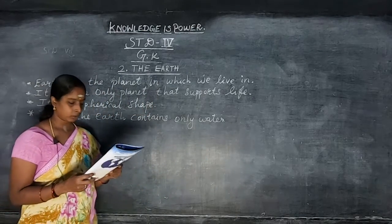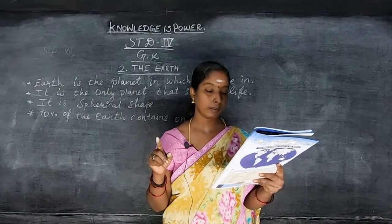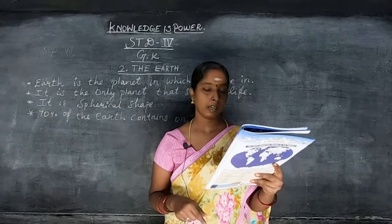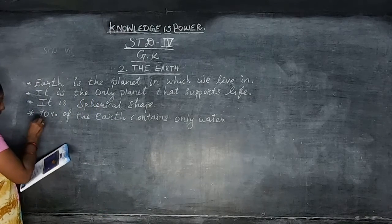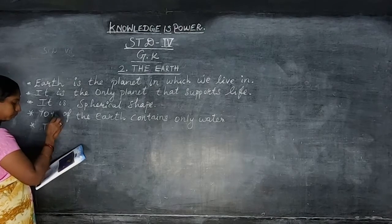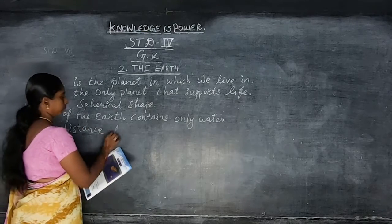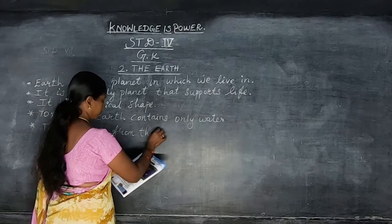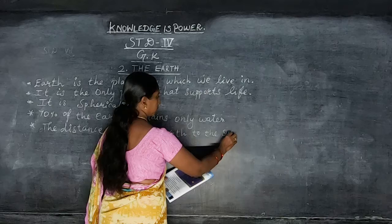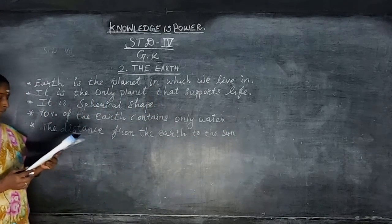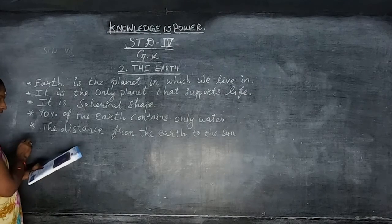The distance from the earth to the sun is 149,597,000 kilometers. D-I-S-T-A-N-C-E from the E-A-R-T-H to the sun.